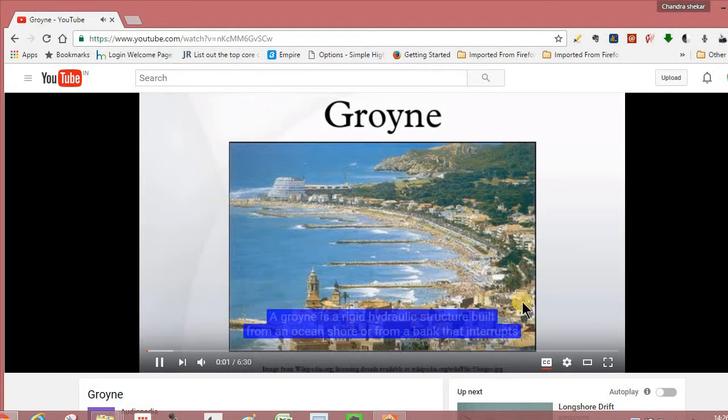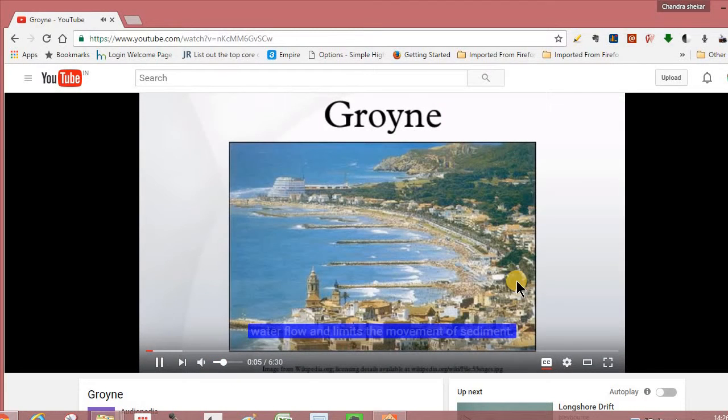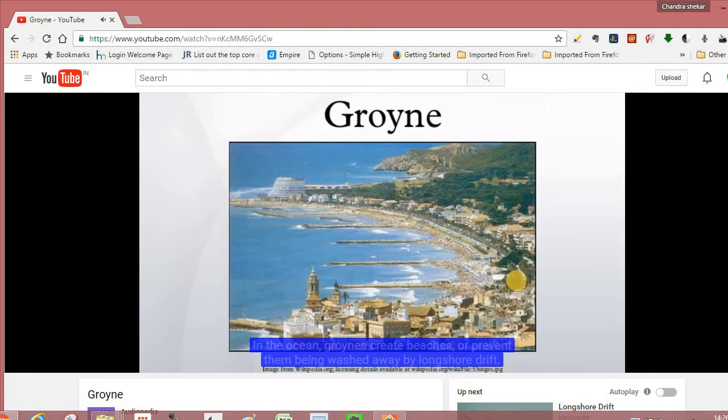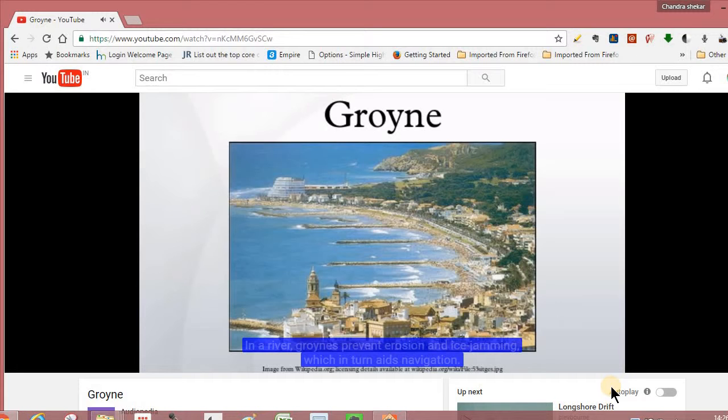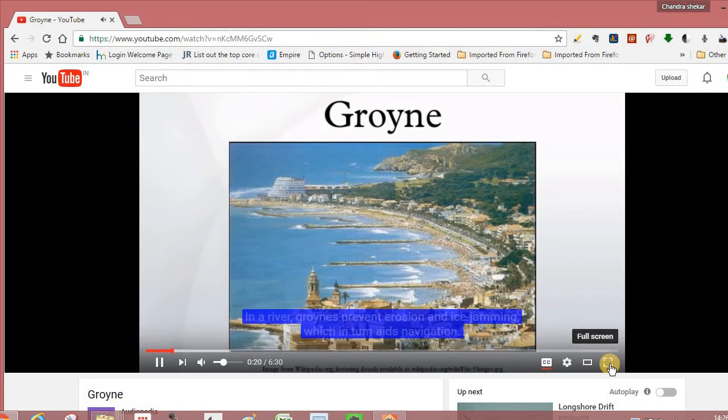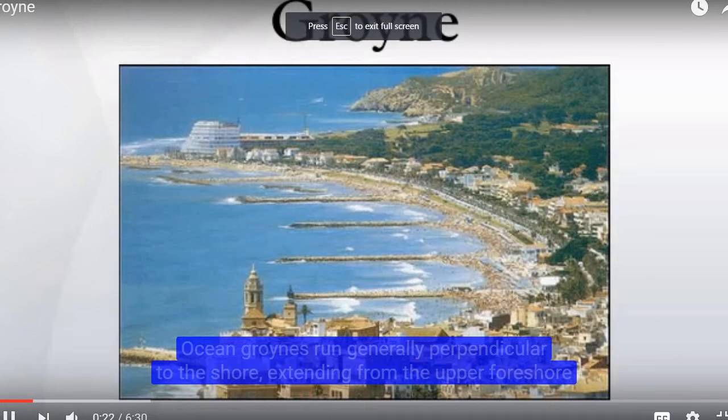A groin is a rigid hydraulic structure built from an ocean shore or from a bank that interrupts water flow and limits the movement of sediment. In the ocean, groins create beaches or prevent them being washed away by longshore drift. In a river, groins prevent erosion and ice jamming, which in turn aids navigation.